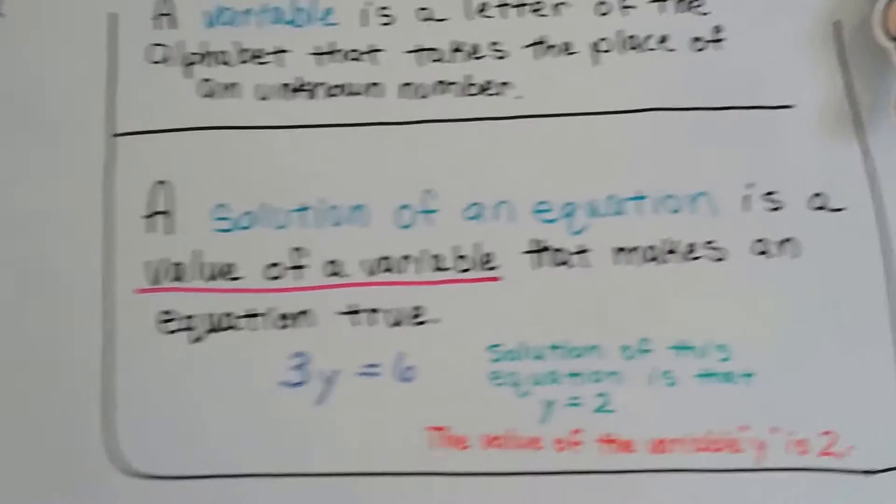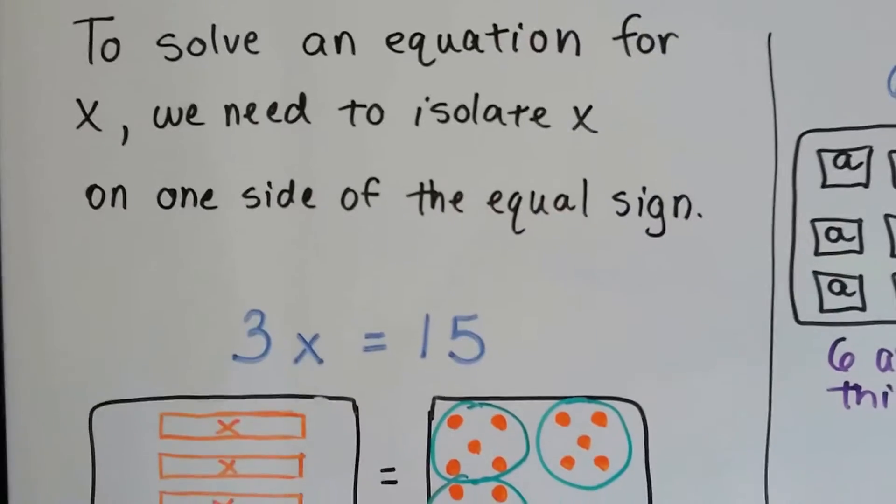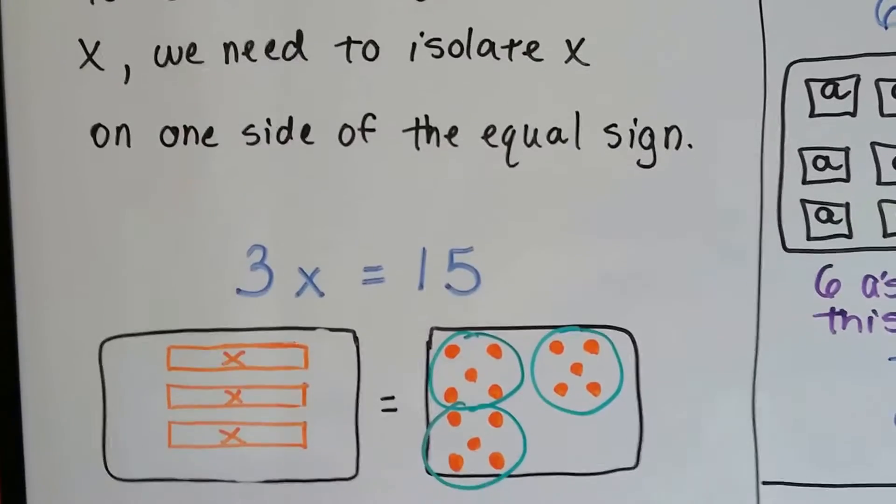Alright, to solve an equation for x, we need to isolate x on one side of the equal sign, just like we did with addition and subtraction.